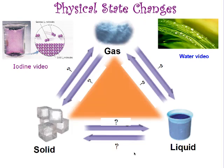Let's start with the two phase changes you're most familiar with. Going from a solid to a liquid — if you put a piece of ice on a table and let it sit there, you're going to see it melting. The opposite of melting — when you put water in a freezer to make ice cubes — is called freezing. So melting and freezing are opposite changes.